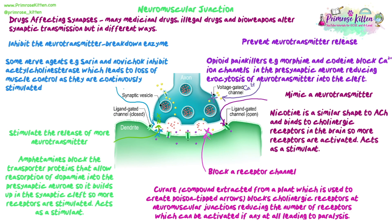So those are five different ways that drugs can work. Mostly it's about thinking: if we block the calcium ion channels in the presynaptic neuron, what will happen? If we block the receptors on the post-synaptic neuron, what will happen? If we block acetylcholinesterase, what will happen? Being able to logically think through those steps and explain the knock-on effects — why a drug causes muscle paralysis or increased stimulation — is key for these application questions.